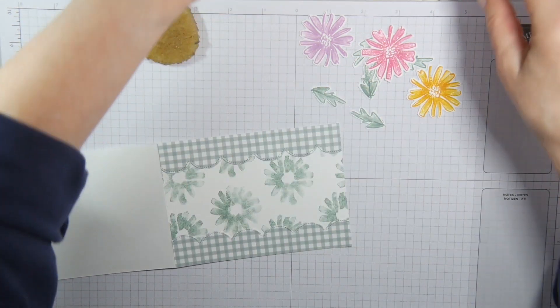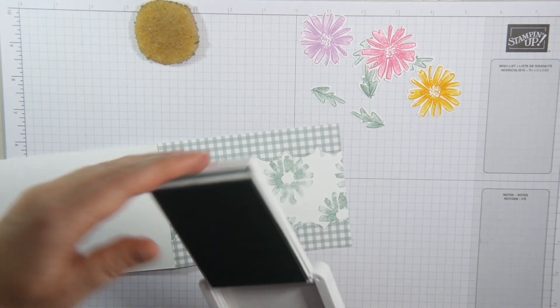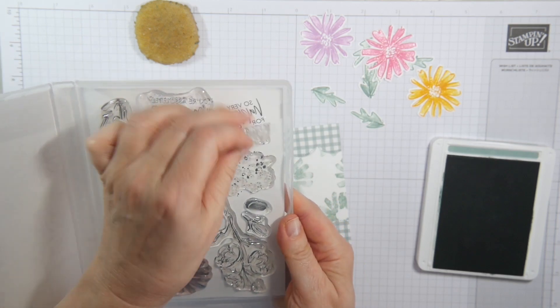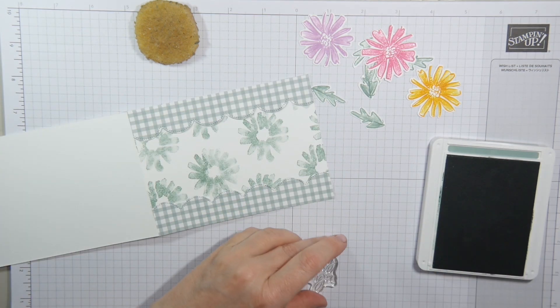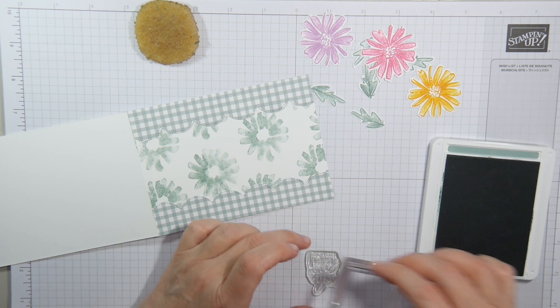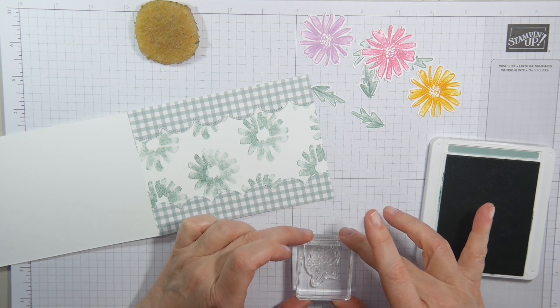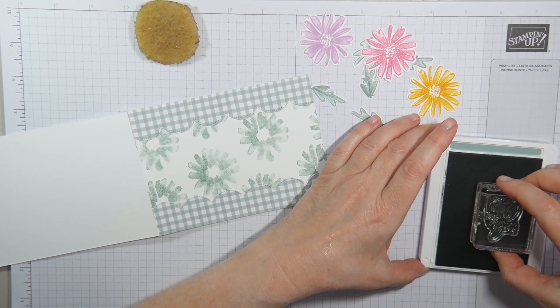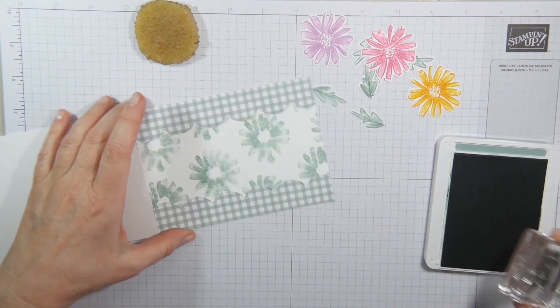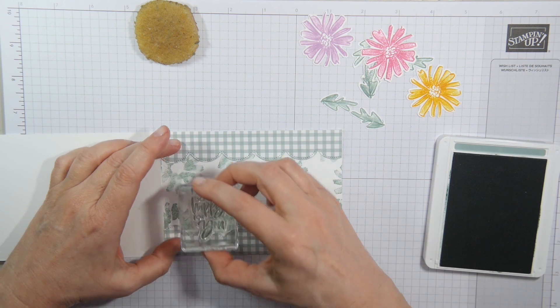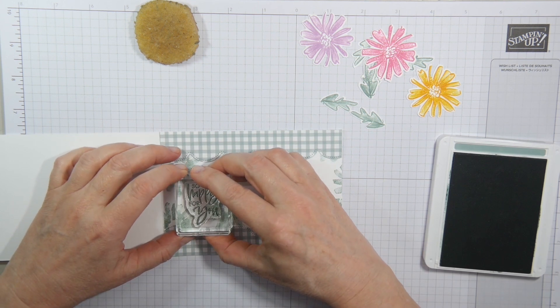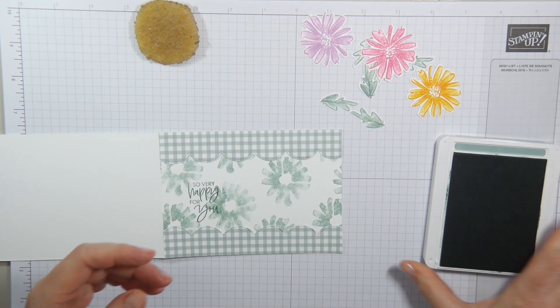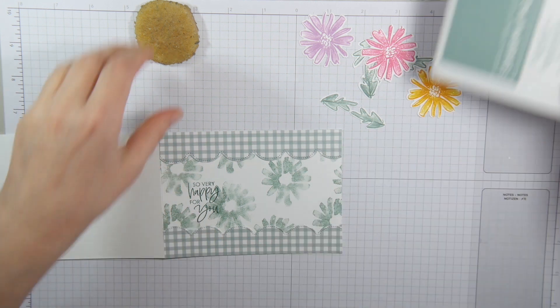There's a bit more stamping to do because I want a sentiment and I've chosen the one from the stamp set as well. So very happy for you. I like the font. It's really beautiful. So I'm trying to get it onto my block as straight as I can. I always think this is tricky because my card is almost finished now. And if I get it wrong this time, I have to start again. So fingers crossed. Well, it's on straight. Great.